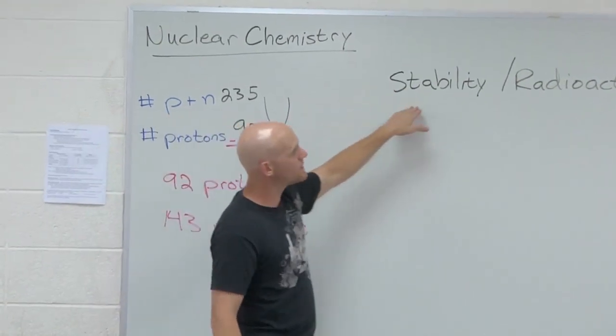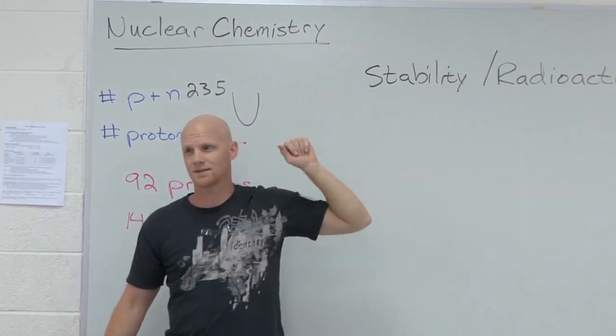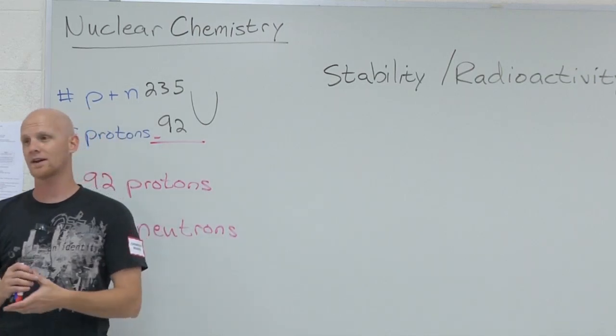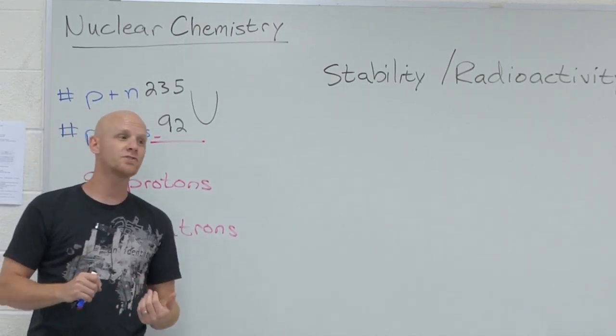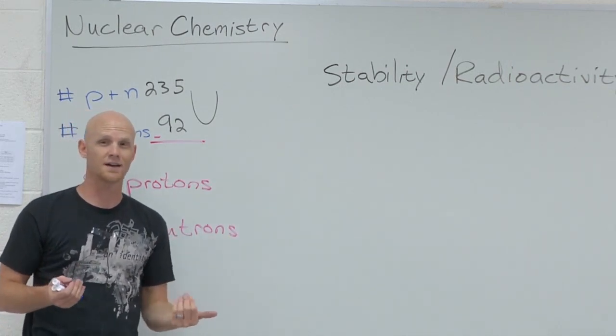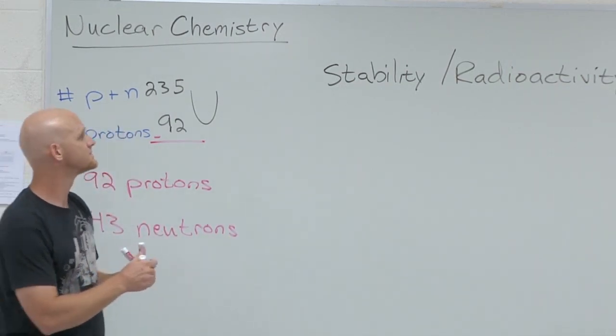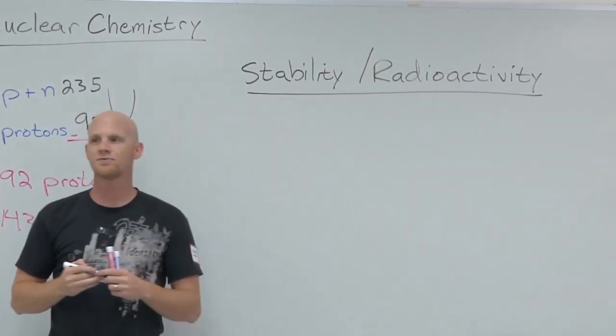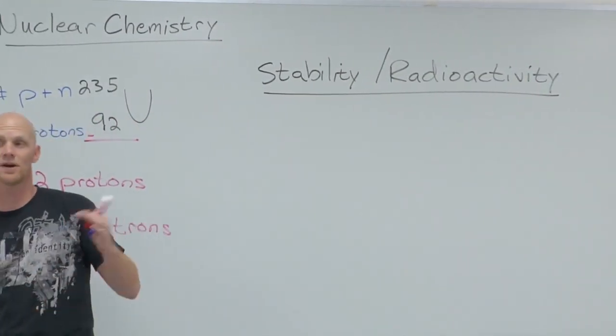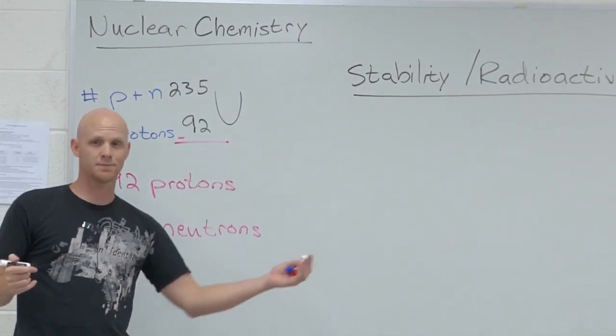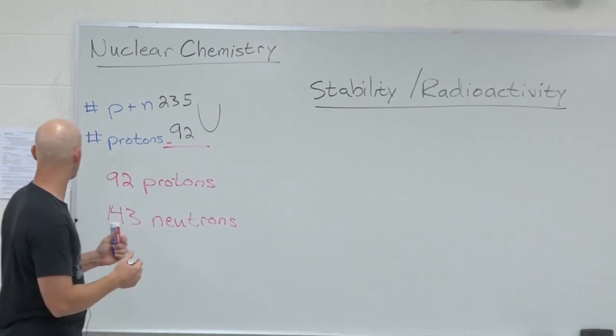So stability and radioactivity again are intimately related. And the way it works is they're inversely related. The more stable a nucleus, the less radioactive it's probably going to be. The less stable a nucleus, the more radioactive it's going to be. So it's unstable nuclei that tend to be radioactive. So I give you some criteria for how you figure out if a nucleus is either stable or unstable, and therefore either not so likely to be radioactive or likely to be radioactive.